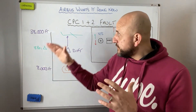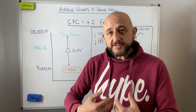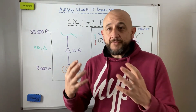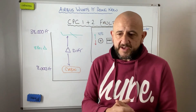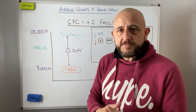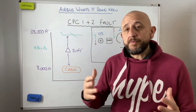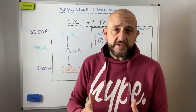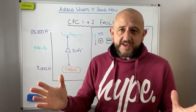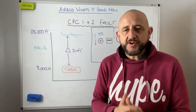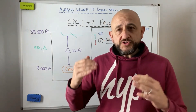One thing to note: the 300 feet per minute set at 38,000 feet won't be maintained all the way down. As air becomes denser at lower altitudes, the same outflow valve position produces a faster rate. For example, a 300 feet per minute cabin descent rate set at 38,000 feet may become 600–700 feet per minute by 20,000 feet. So periodically check and adjust to maintain approximately 300 feet per minute throughout the descent.